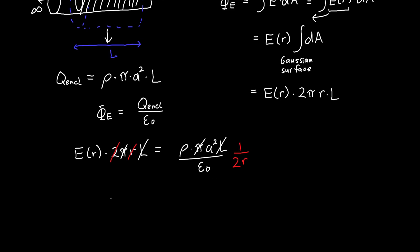Now we get that the electric field as a function of r is rho a² over 2 epsilon naught times r. And so the electric field falls off like 1 over r, and this is for r greater than a, so our radius—we're outside of the cylinder.